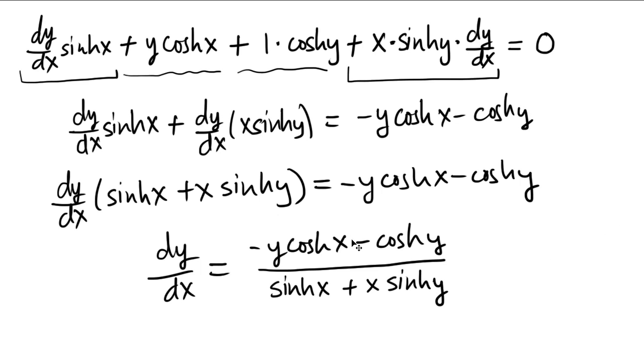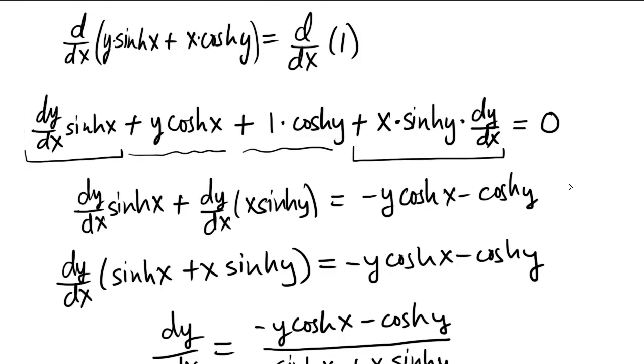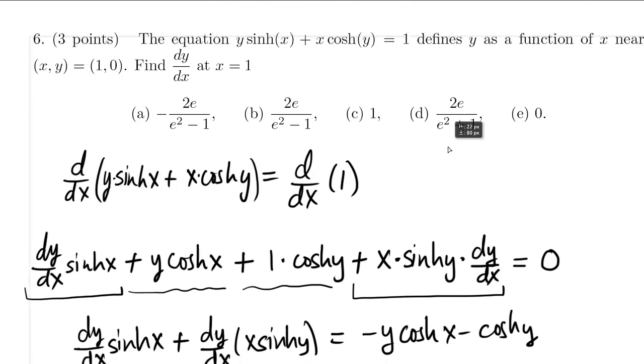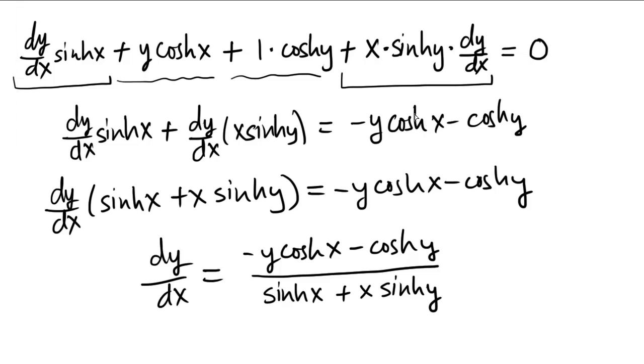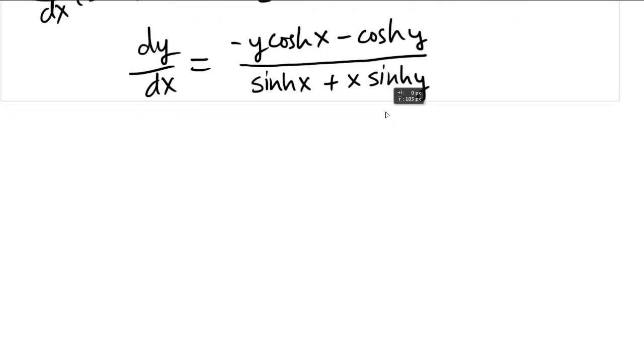The next thing we have to do is actually put some numbers in here. Notice since there's x's and y's floating around in our derivative, we actually need to emphasize that the derivative is not only at x equals 1, but the y value is also important too. And fortunately, they tell us that. So in our derivative now, our goal is to replace x by 1 and y by 0. And that'll give us the answer.